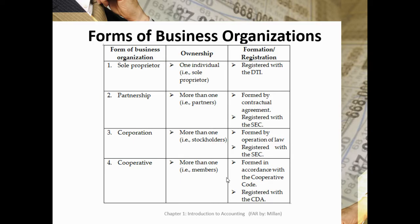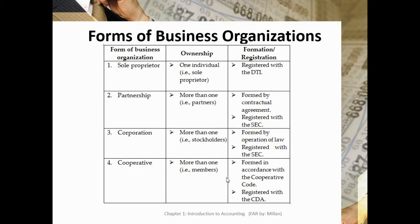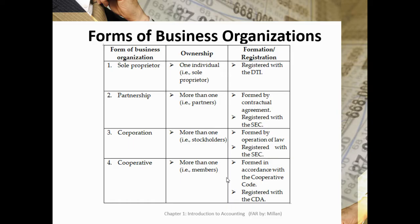Next are the different forms of business organizations. There are: sole proprietorship, partnership, corporation, and cooperative. In this subject, we will touch on sole proprietorship, partnership, and corporation. In sole or single proprietorship, it is a business that is owned by only one individual. It is the most common and simplest form of business organization. The business owner is called a sole proprietor. A sole proprietorship is registered with the Department of Trade and Industry.